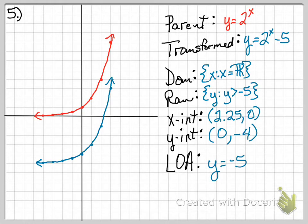On number 5. The transformed function was y equals 2 to the x minus 5. And the parent function is y equals 2 to the x. The transformed function moves down 5 units. You see the parent in red, the transformed 5 down in blue.